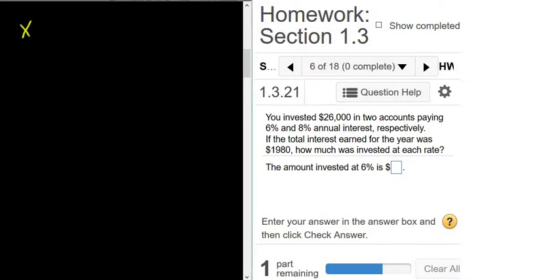So we'll start by letting x be the money invested at 6%. Now you can do this problem with one variable or with two variables. I'll do it with two variables and then I'll explain how to do it with one in the middle of the problem.